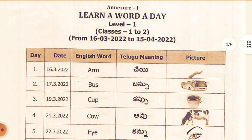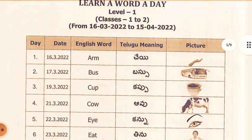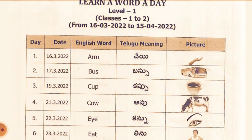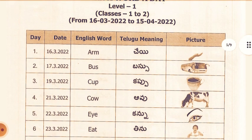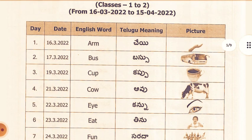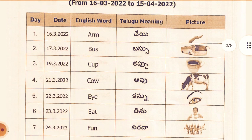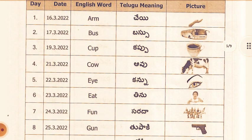For 16th March, the word is Aam. Telugu meaning: Chehi. 17th March word is Bus. Telugu meaning: Bassu. 19th March word is Cup. Telugu meaning: Kappu. 21st March is Cow. Telugu meaning: Aavu. Also Aai, Kannu.